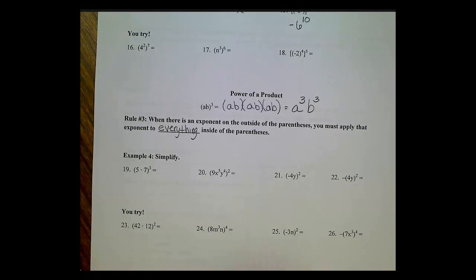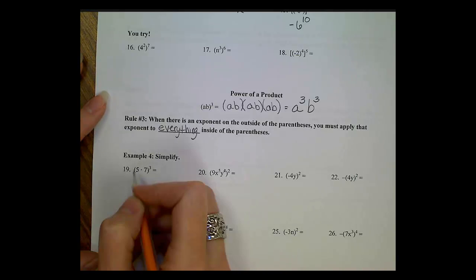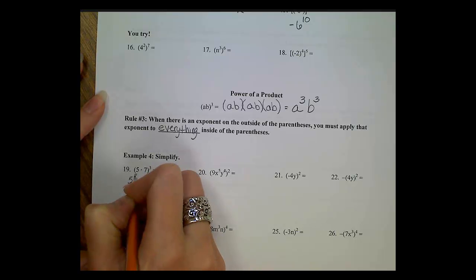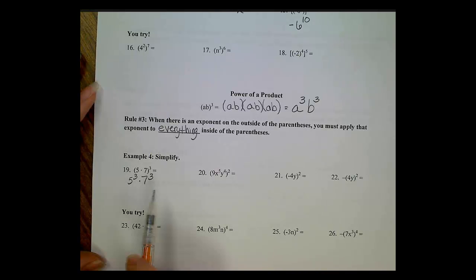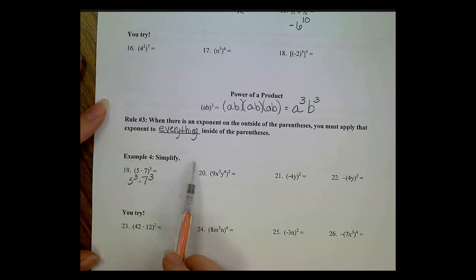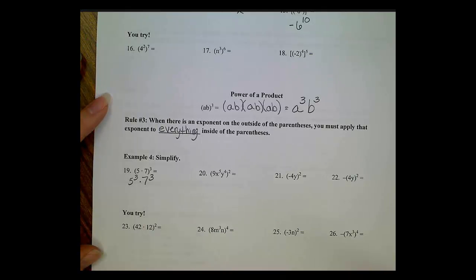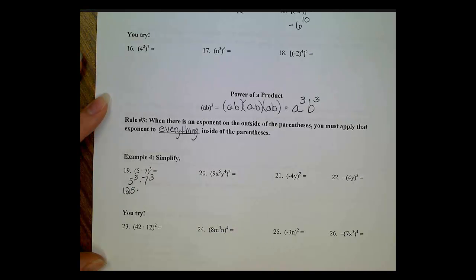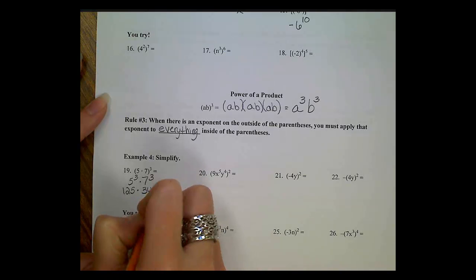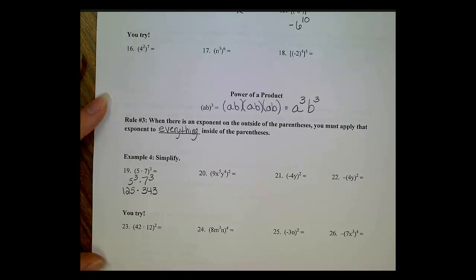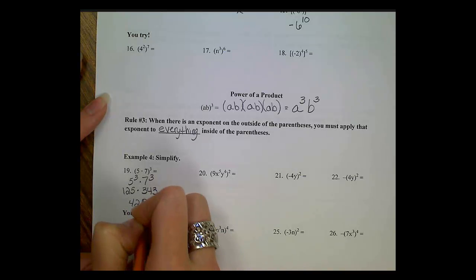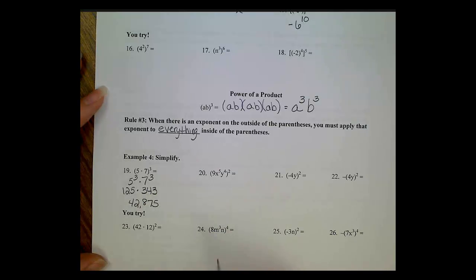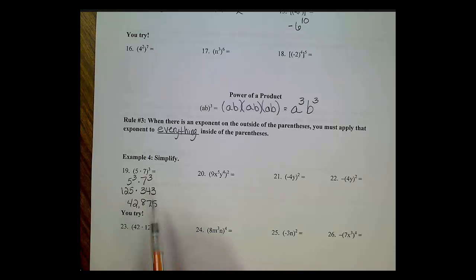Applying Rule 3 to example number 19: everything inside the parentheses gets the outside exponent applied to it. The 5 gets cubed and so does the 7. Let's evaluate: 5 cubed gives us 125, and 7 cubed gives us 343. Multiplying those together gives us 42,875. We did a little extra on this problem, but it's good practice evaluating those exponents.